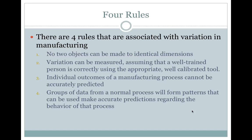The Four Rules. There are four rules that are associated with variation in manufacturing. 1. No two objects can be made to identical dimensions. 2. Variation can be measured assuming that a well-trained person is correctly using the appropriate well-calibrated tool. 3. Individual outcomes of a manufacturing process cannot be accurately predicted. 4. Groups of data from a normal process will form patterns that can be used to make accurate predictions regarding the behavior of that process.